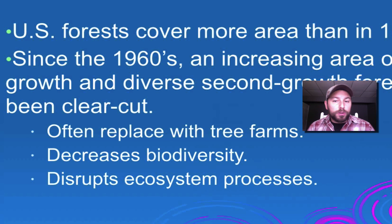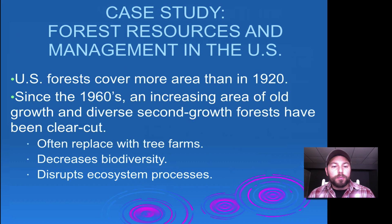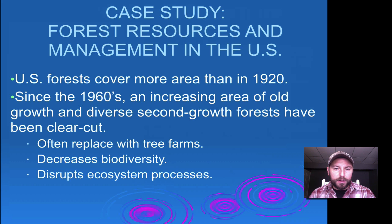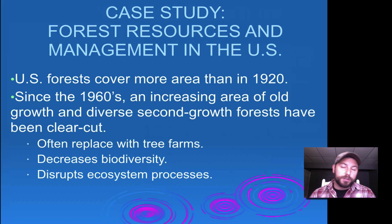Looking at forest resource management in the United States: U.S. forests now cover more area than in 1920, so we've seen an increase in forested areas — not old-growth, but still an increase. Since the 1960s, increasing areas of old-growth and diverse second-growth forests have been clear-cut, and we're replacing them with tree farms, which ultimately decrease biodiversity and disrupt ecosystem processes.